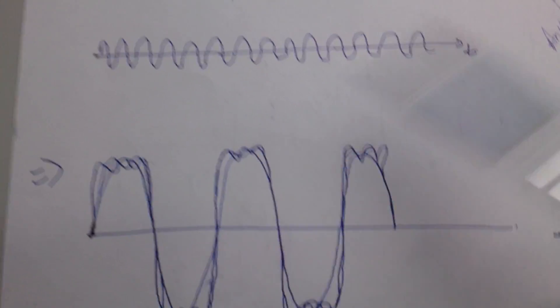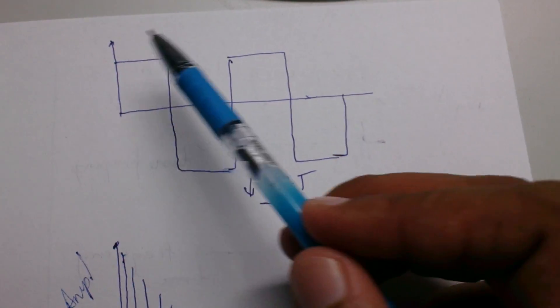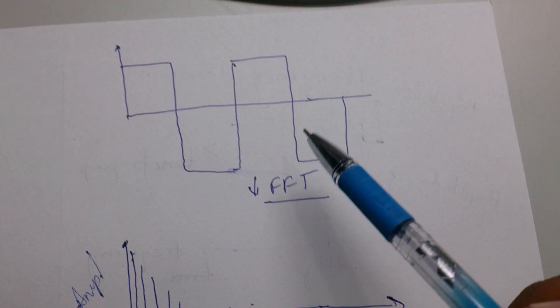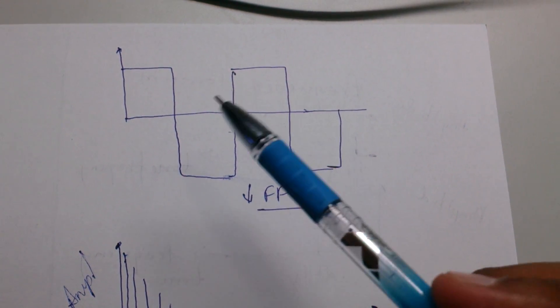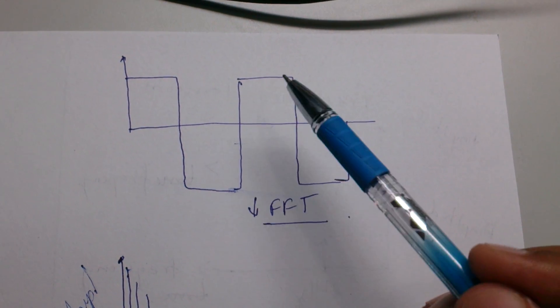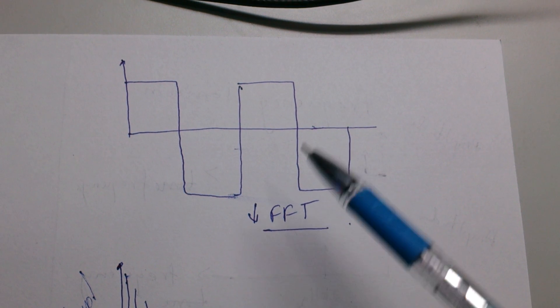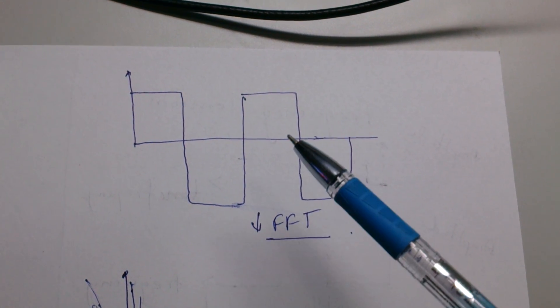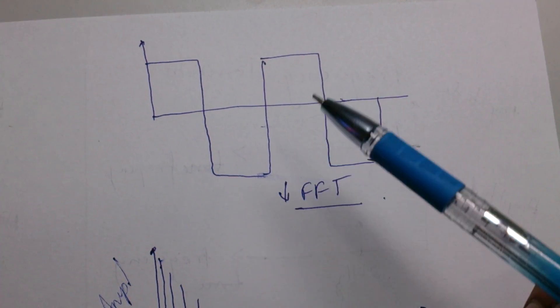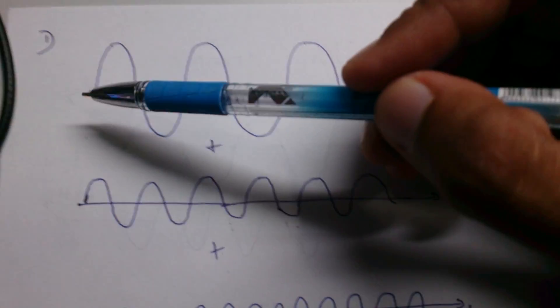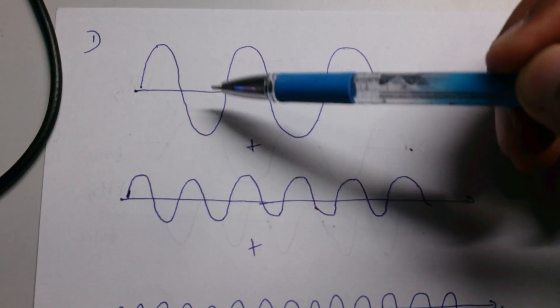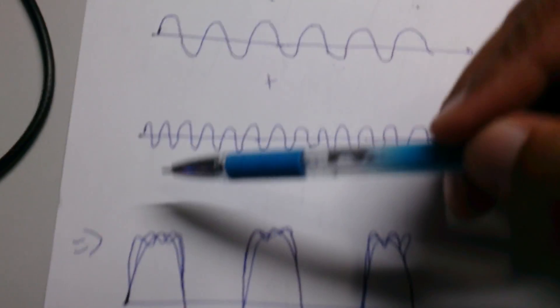If I want to generate a square wave and if I tell you that it's a superposition of different sinusoidal signals, it may seem a bit weird at beginning but that's the beauty of Fourier transform. Let's see how it works.